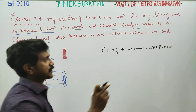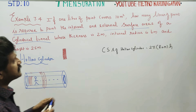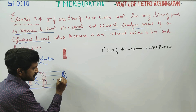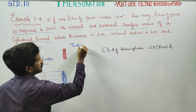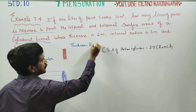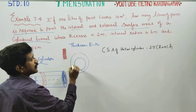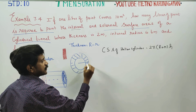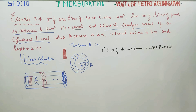Now let's enter the values given. The thickness is 2 meters. Thickness is equal to capital R minus small r. Looking at the cylinder shape, capital R is the outer radius and small r is the inner radius. So capital R minus small r gives you the thickness.